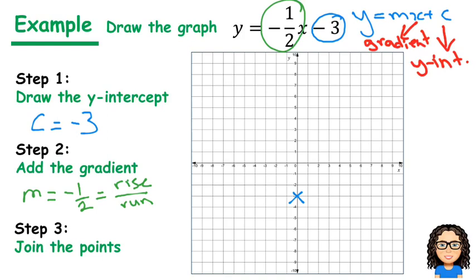So what we want to do is from that coordinate point that we've already drawn in the graph, so from that blue cross, we want to rise up by negative 1, which means going down. So I'm going to go down by 1, and I'm going to go across by 2. And that's going to take me to the next coordinate point.